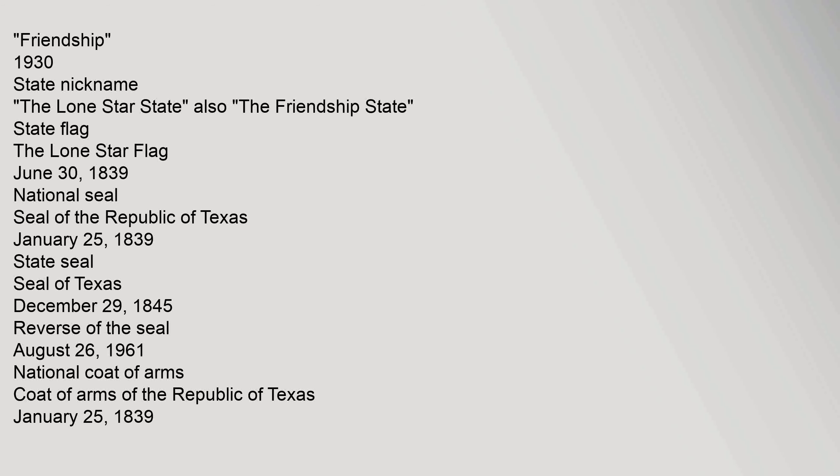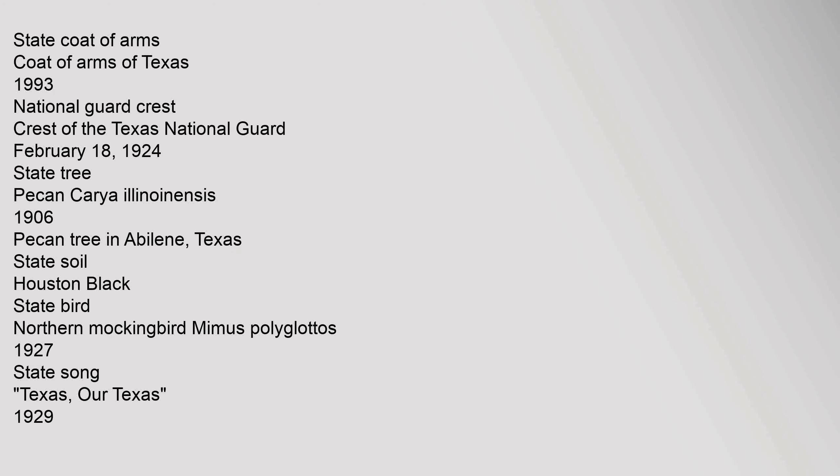National Coat of Arms: Coat of Arms of the Republic of Texas, January 25, 1839. State Coat of Arms: Coat of Arms of Texas, 1993. National Guard Crest: Crest of the Texas National Guard, February 18, 1924. State Tree: Pecan (Carya illinoinensis), 1906 — Pecan Tree in Abilene, Texas. State Soil: Houston Black. State Bird: Northern Mockingbird (Mimus polyglottos), 1927. State Song: Texas, Our Texas, 1929.